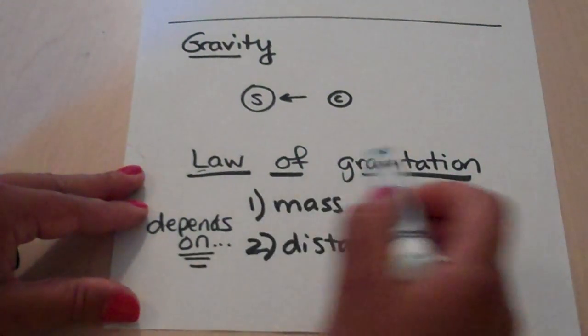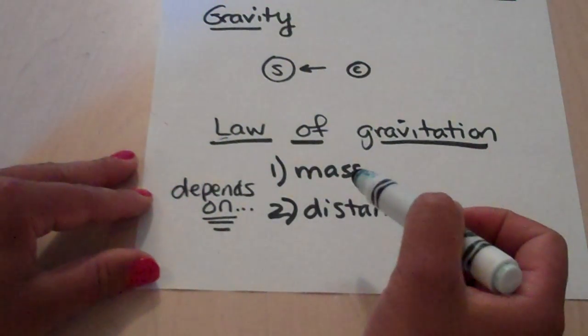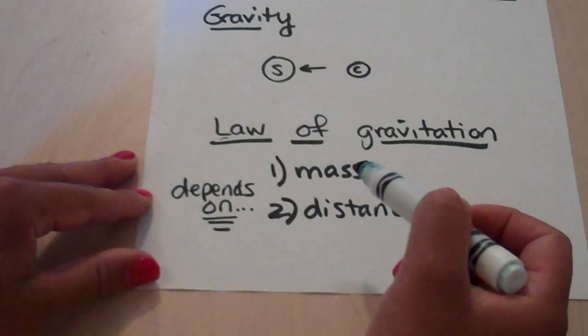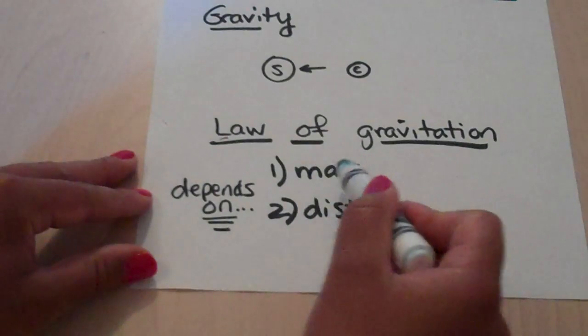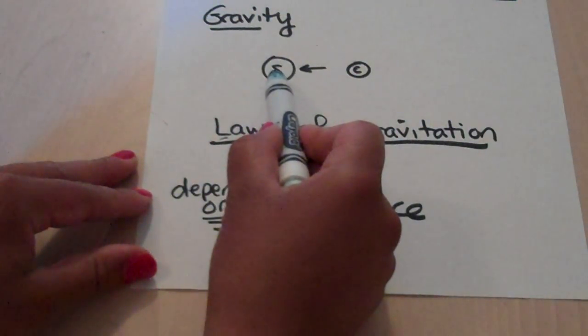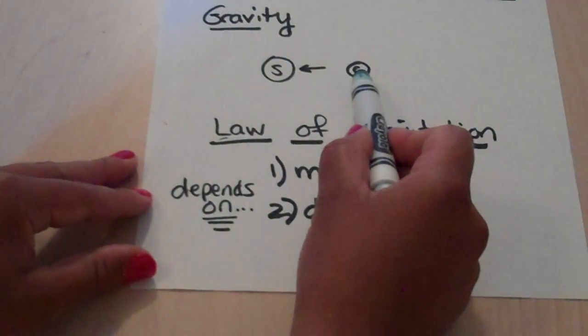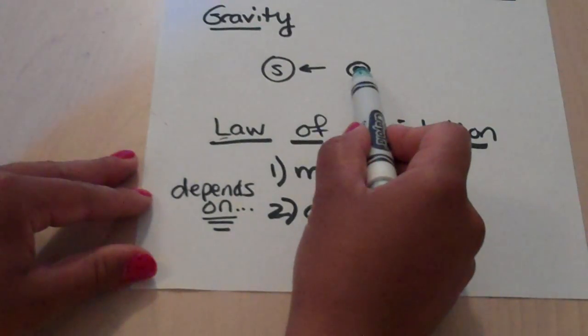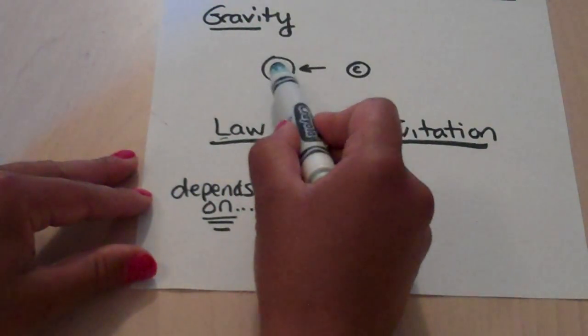So the law of gravitation depends on two things. First of all, the law states that every object in the universe attracts to one another, and the two things it depends on is how massive the object is. So the sun is very massive and has a lot more gravity, a force of attraction. And the earth also has a new attraction, but since the sun is a larger object than the earth, it'll have a stronger pull of attraction.